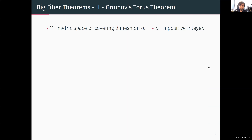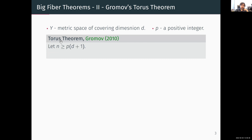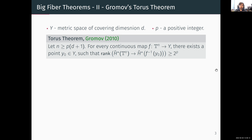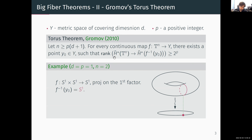Second is Gromov's torus theorem. The setting is somewhat similar: Y is a metric space of dimension d and p is a positive integer, but this time we fix n to be at least p times d+1. The theorem says that every continuous map from the n-dimensional torus to a metric space of dimension d must have a big fiber, where the notion of size is that the rank of the restriction map in cohomology is at least 2 to the p-th power.